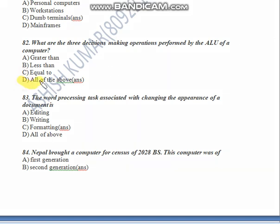Answer is D — all of the above. Question Number 83: The word processing task associated with changing the appearance of a document is what?